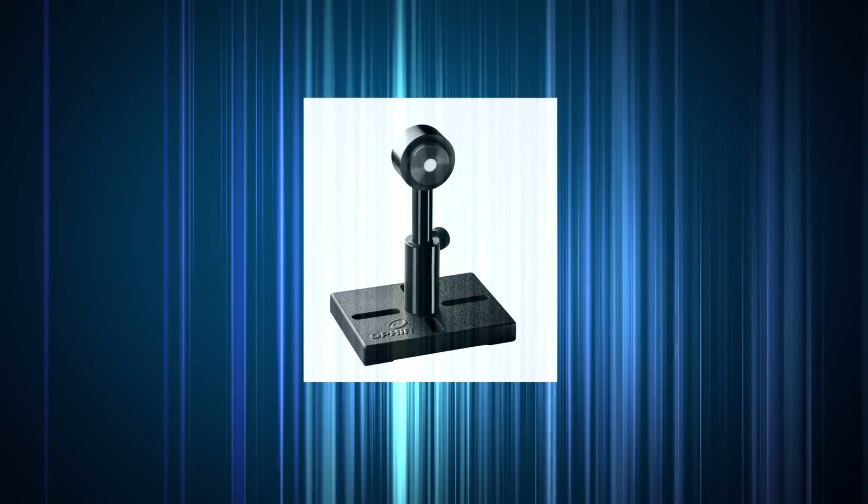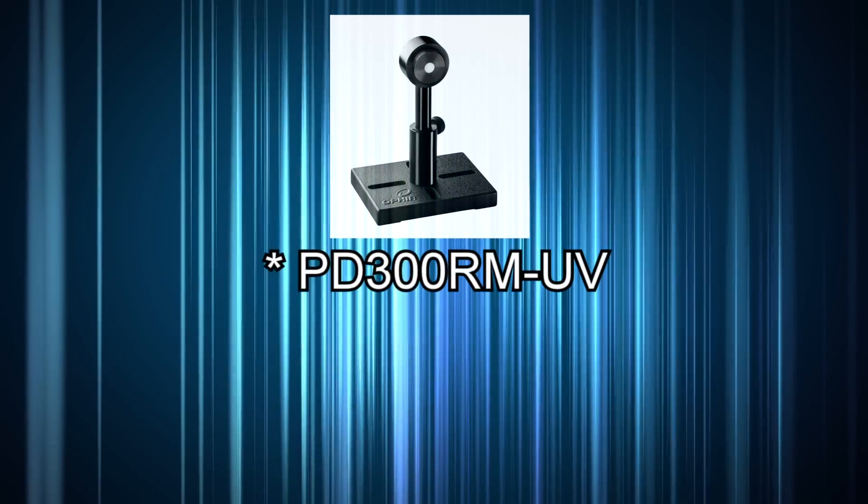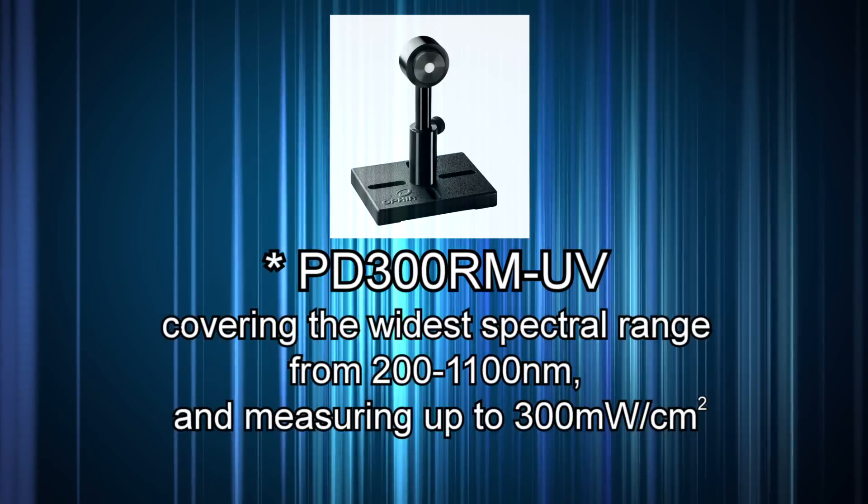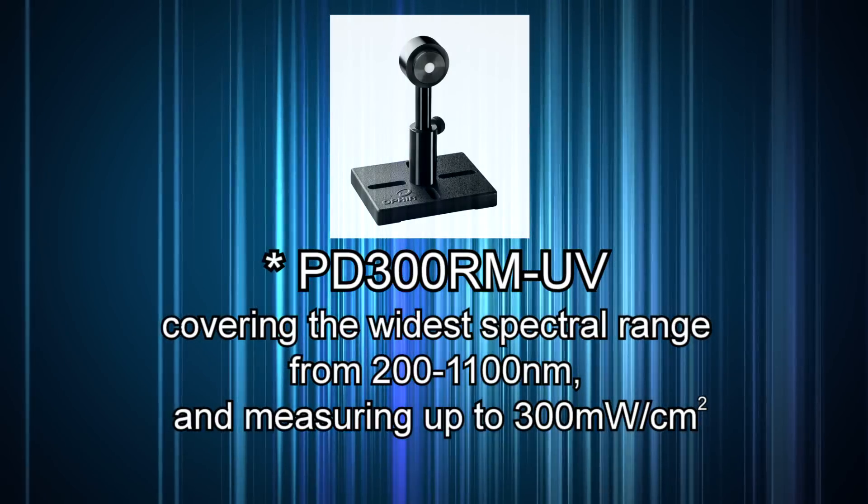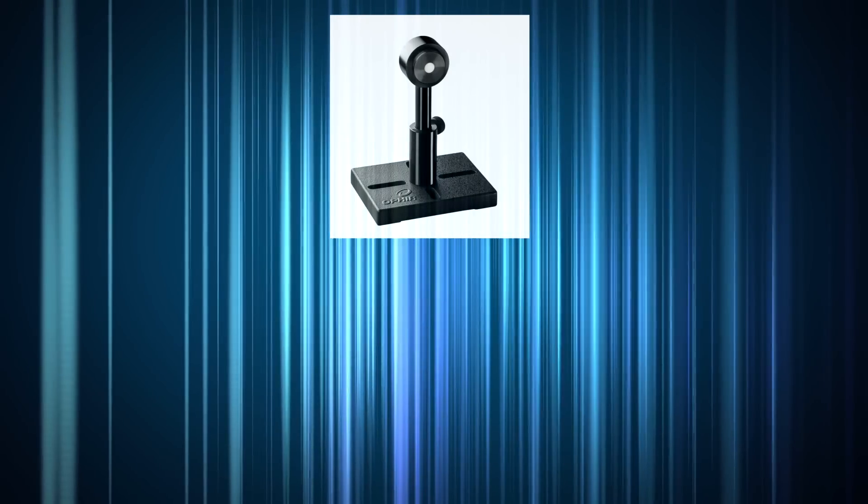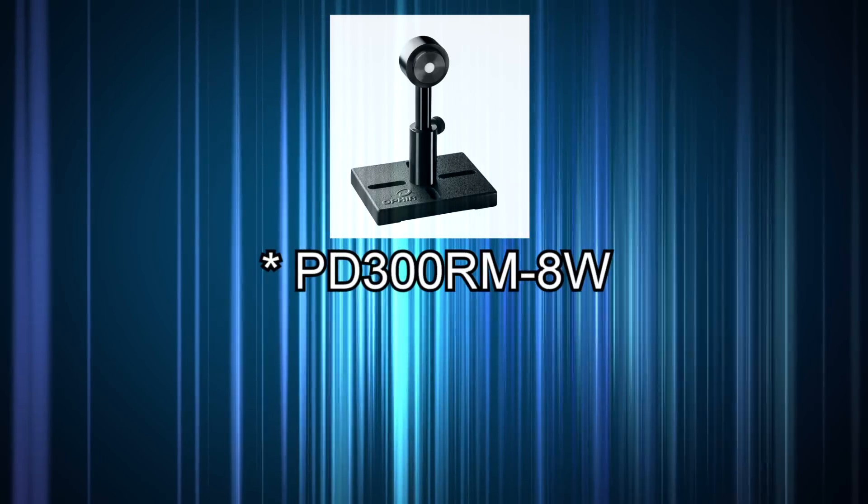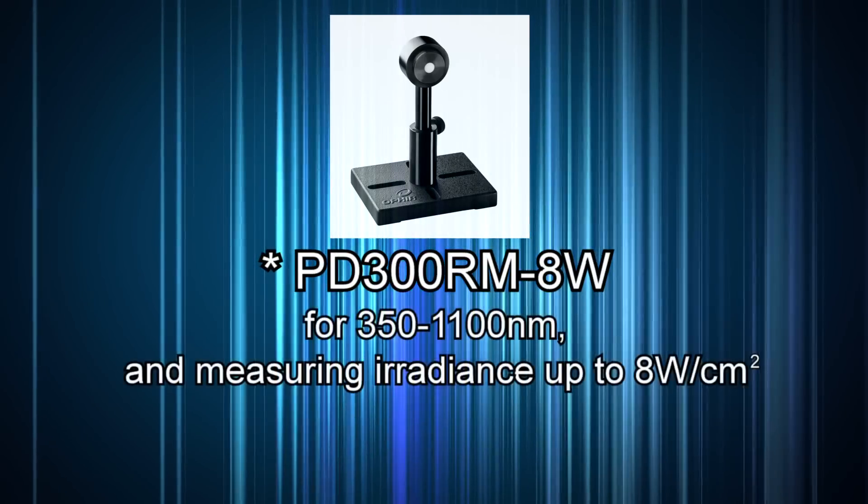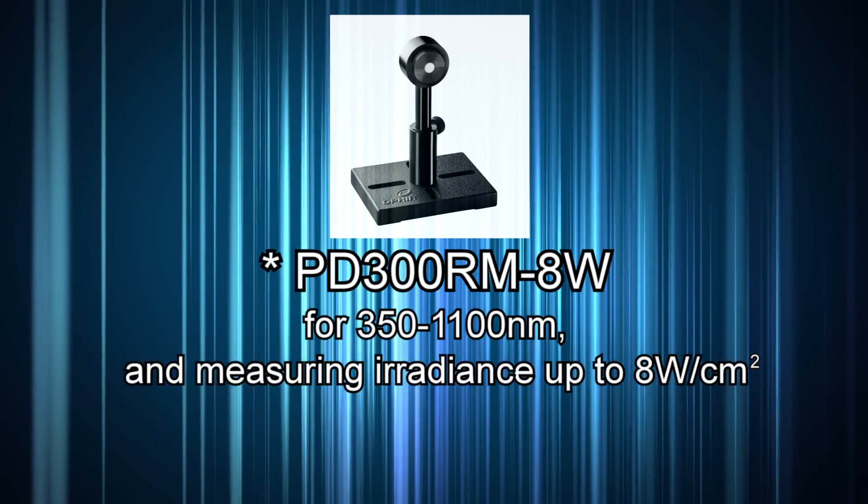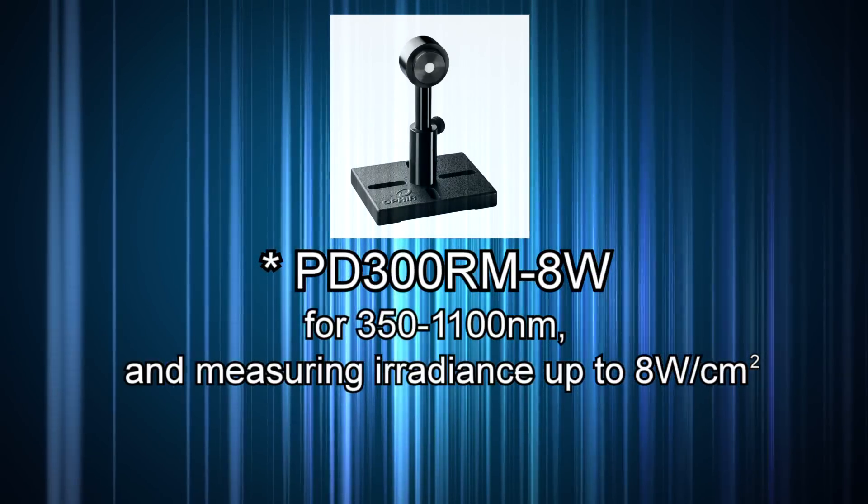There are two available models: PD300RM-UV covering the widest spectral range from 200 to 1100 nanometers and measuring up to 300 milliwatts per square centimeter. For higher powers, there's the PD300RM-8W for 350 to 1100 nanometers and measuring irradiance up to 8 watts per square centimeter.